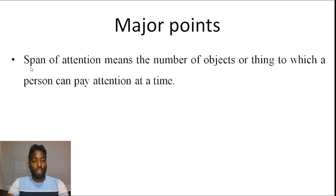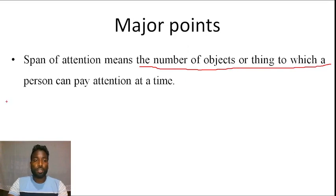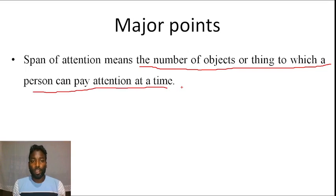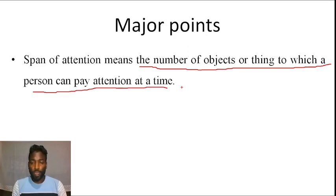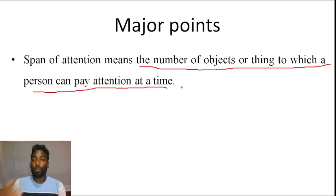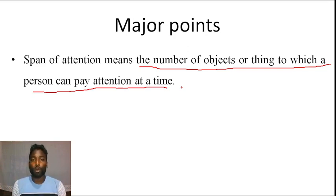Span of attention means the number of objects or things to which a person can pay attention at a time. In other words, it refers to how many objects or things a person can pay attention to at the same time.